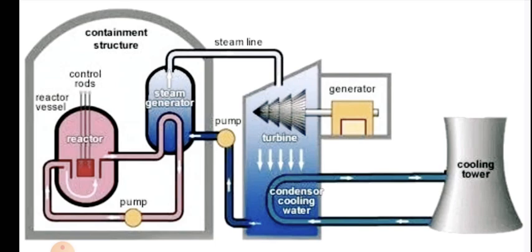The energy released by the nuclear reaction is given by Einstein's equation E = mc², where E is the energy, m is the mass in kilograms, and c is the velocity of light in meters per second. Notes are available in the description — you will find a link through which you can download them. Thank you for watching.